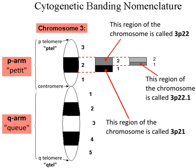In genetics, a locus is a specific, fixed position on a chromosome where a particular gene or genetic marker is located. Each chromosome carries many genes, with each gene occupying a different position or locus. In humans, the total number of protein-coding genes in a complete haploid set of 23 chromosomes is estimated at 19,000–20,000. Genes may possess multiple variants known as alleles, and an allele may also be said to reside at a particular locus.